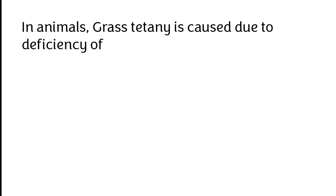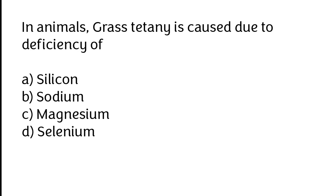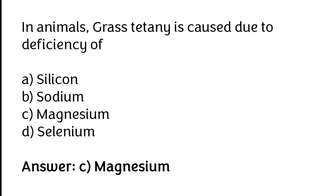In animals, grass tetany is caused due to the deficiency of: silicon, sodium, magnesium, selenium. The correct answer is option C. In animals, grass tetany is caused due to the deficiency of magnesium.